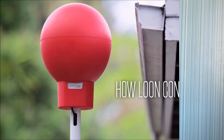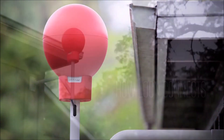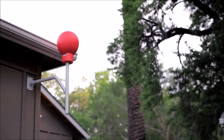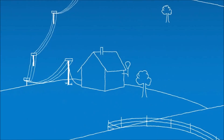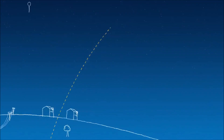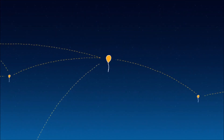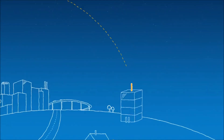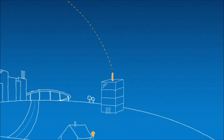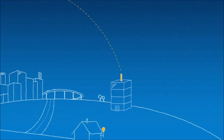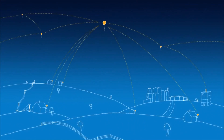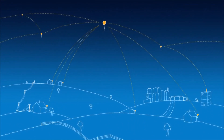We also have a clip which explains how one balloon connects to the other. The balloons communicate with specialized internet antennas on the ground. This antenna here points up at the sky and talks to this balloon. Each one of these balloons talks to their neighboring balloons and then back down to the ground station, which is connected to the local internet provider. What this does is it creates a network in the sky.